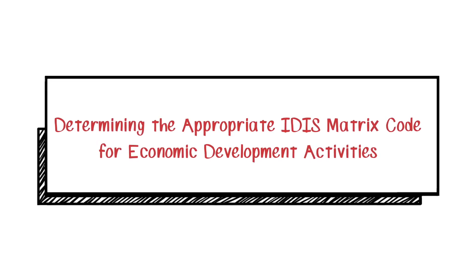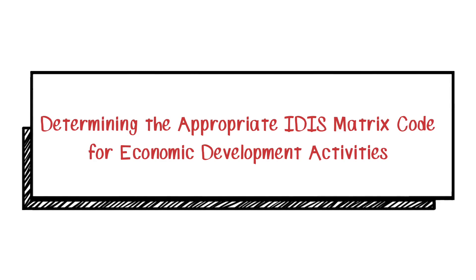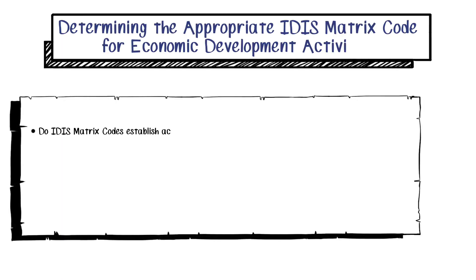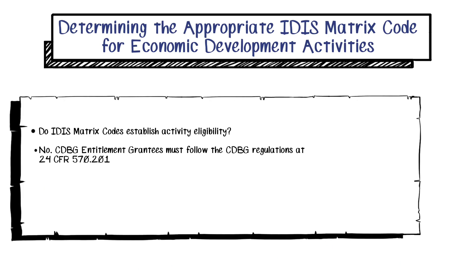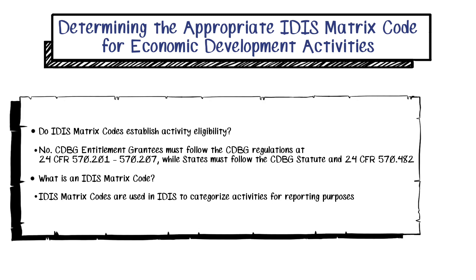In this session, we will learn how to determine the appropriate Integrated Disbursement and Information System Matrix Code for Economic Development Activities receiving CDBG funds. IDIS Matrix Codes do not establish activity eligibility. CDBG Entitlement Grantees are responsible for determining activity eligibility based on the CDBG regulations, and states determine eligibility based on the CDBG statute. The IDIS Matrix Code definitions provide the regulation and statute citations, which makes it easier to find them.